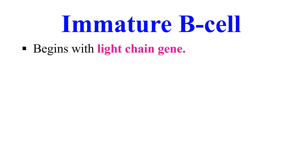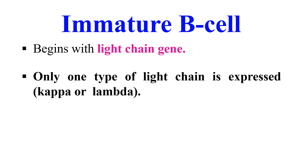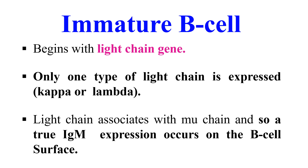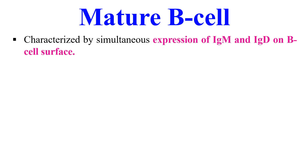The next stage is the immature B cell. Here, formation of the light chain begins, and only one type of light chain will be expressed — either kappa or lambda, never both. This light chain associates with the mu chain, so a true IgM receptor is developed at this stage. In the mature B cell stage that follows, the B cell is characterized by the presence of both IgM and IgD on its surface.